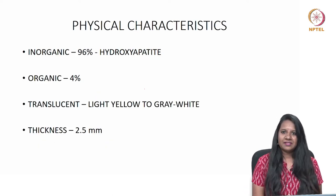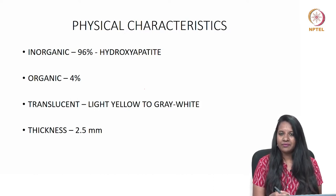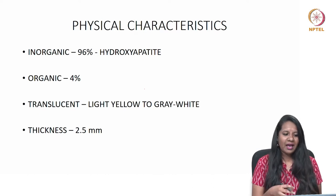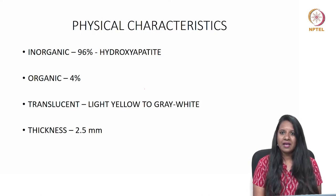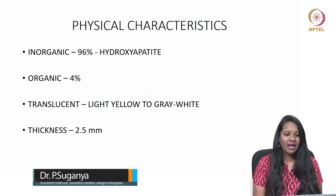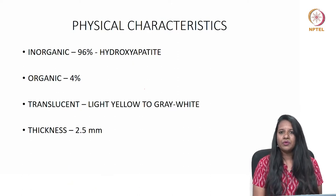Moving to the physical characteristics, enamel consists of 96% inorganic material comprising hydroxyapatite crystals — calcium, phosphate and carbonate ions — and traces of selenium, lead and fluoride, which are incorporated if these trace elements were present during enamel formation. It consists of 4% organic material. Dissolution of these ions leads to dental caries, providing the chemical basis for caries. This highly mineralized tissue helps enamel withstand heavy occlusal forces. The color varies from light yellow to grey-white and it is generally translucent. Thickness varies from 2.5 mm on the occlusal aspect to a feather edge at the cervical area.